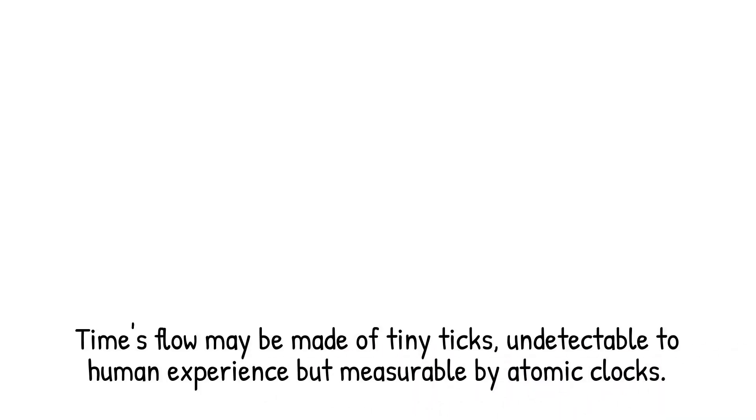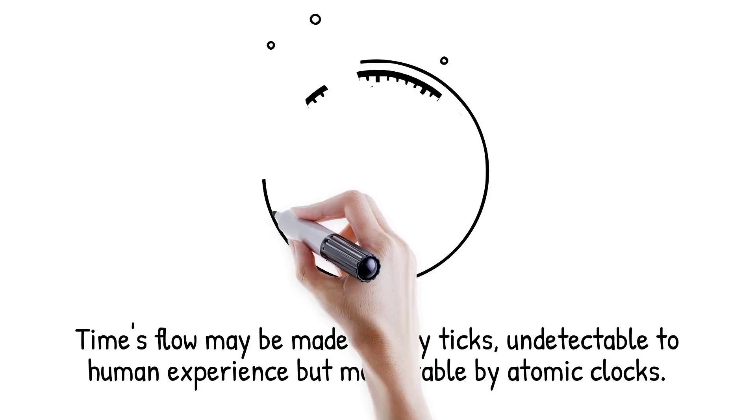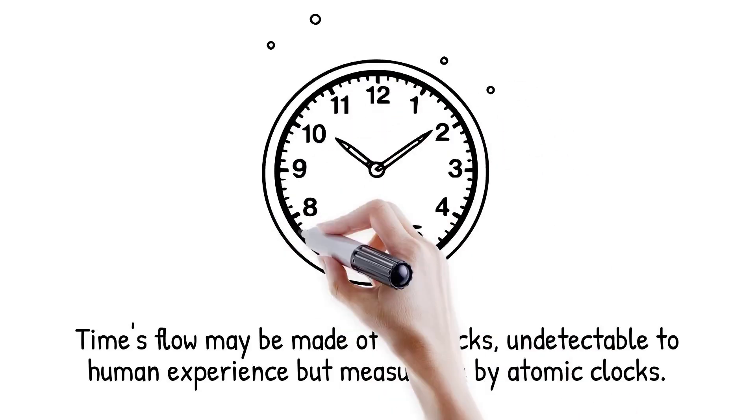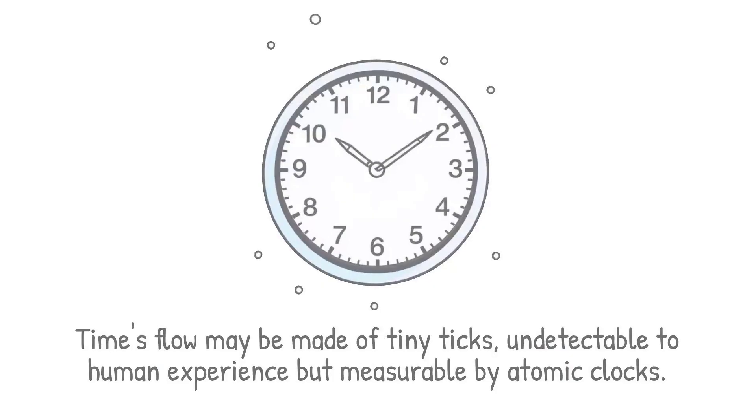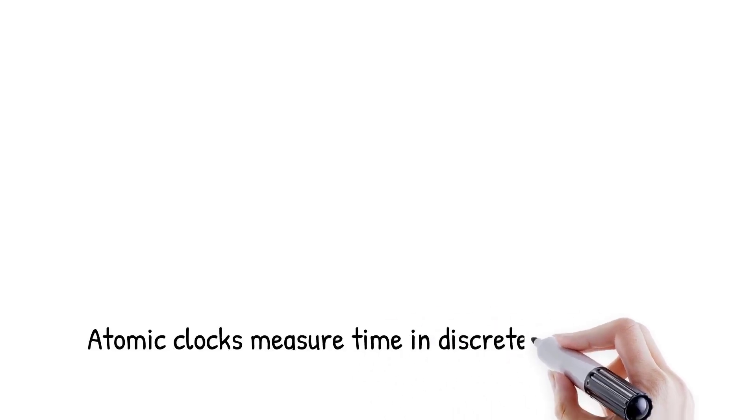Atomic clocks measure time in discrete oscillations of atoms, revealing how timekeeping itself is quantized. It is like listening to a symphony that feels continuous but is played note by note.